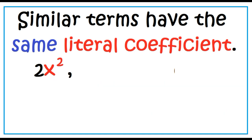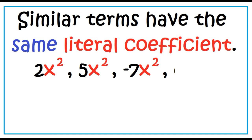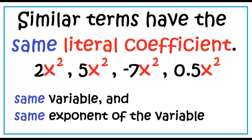Similar to 2x squared are 5x squared, negative 7x squared, and 0.5x squared. Each of these expressions have the same variable and the same exponent of the variable.